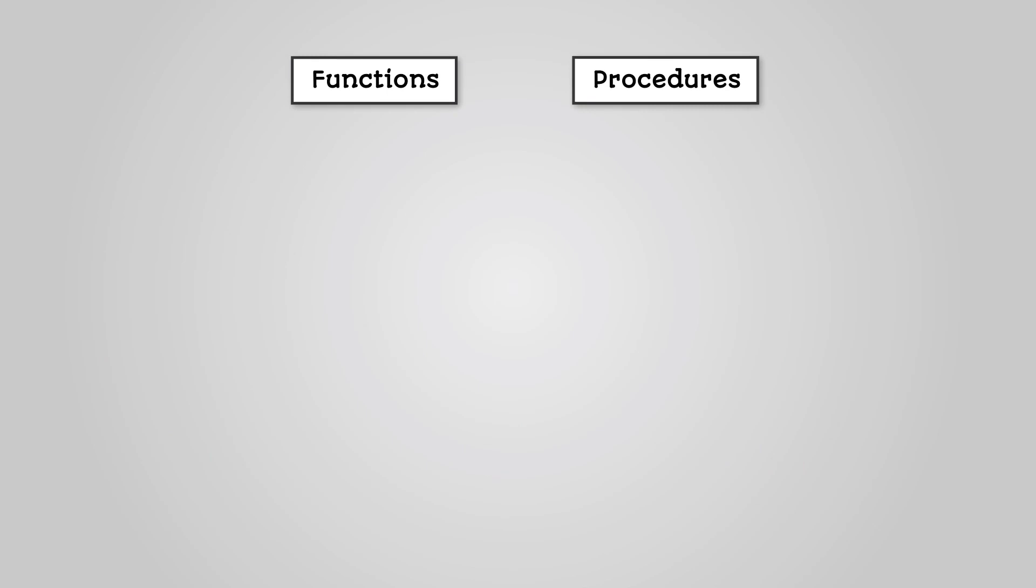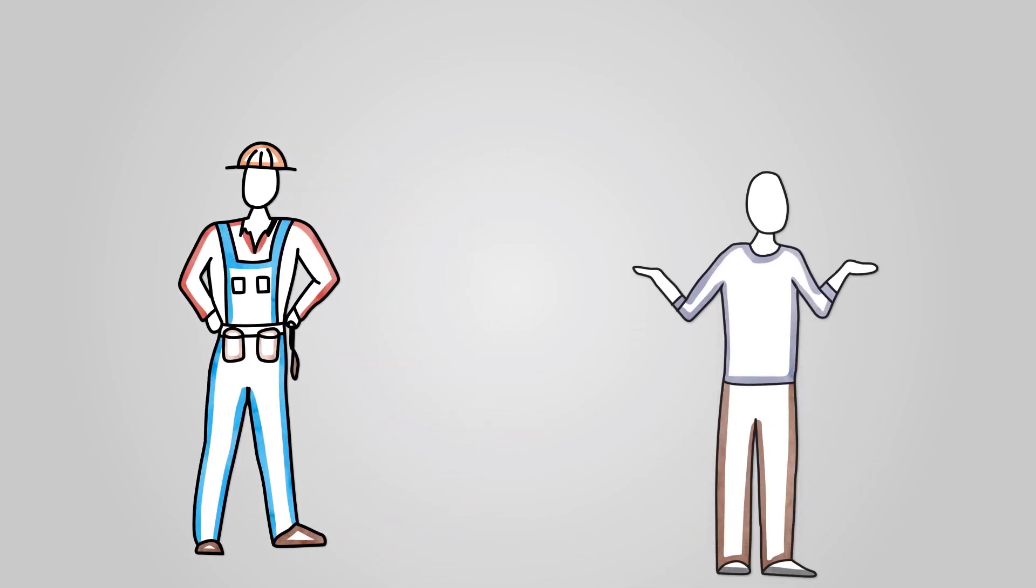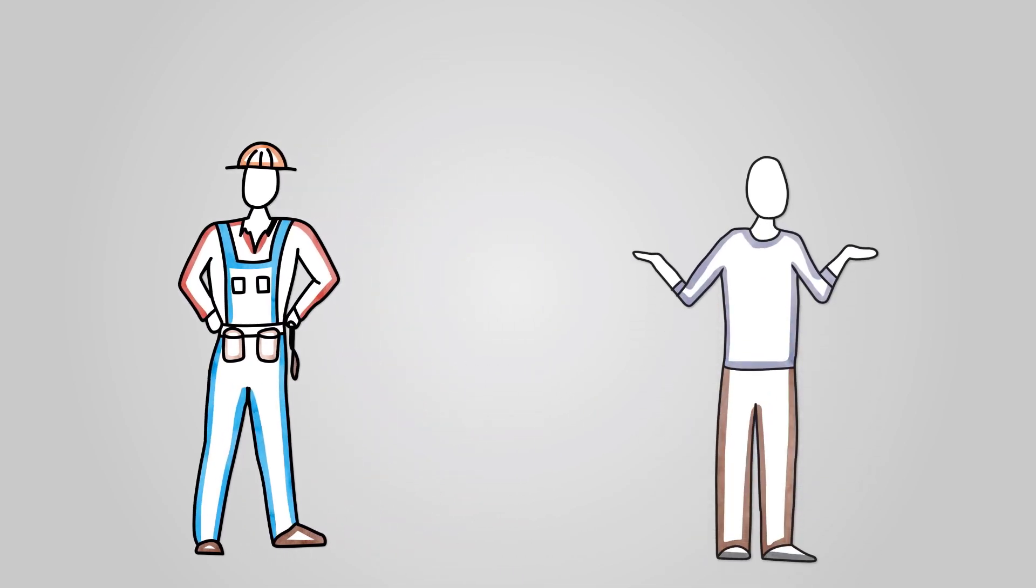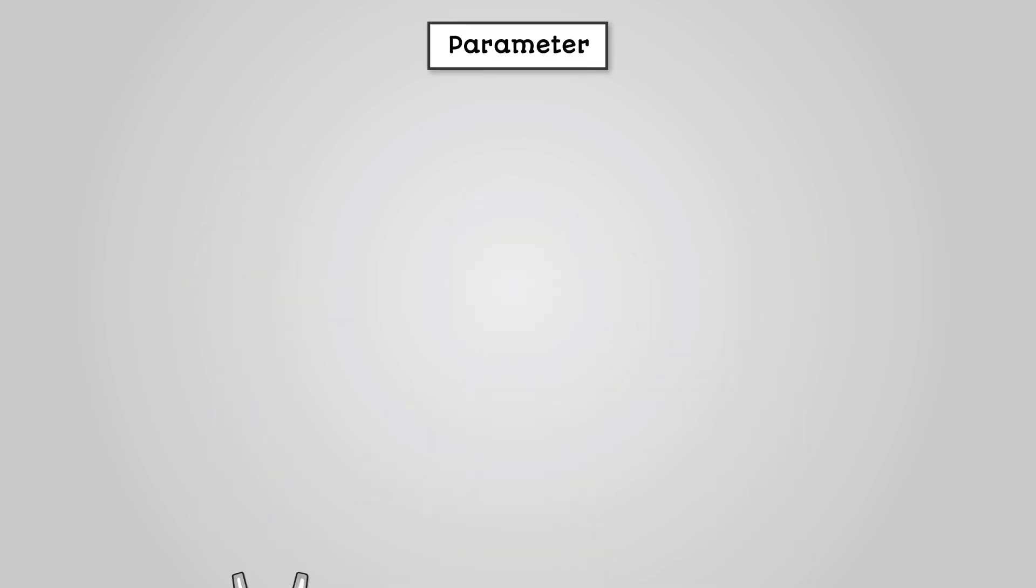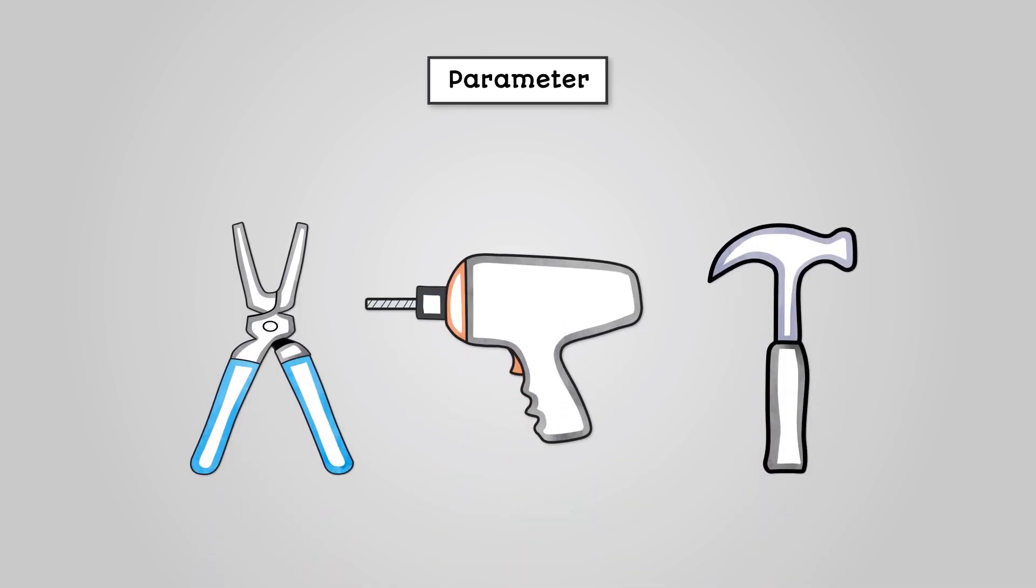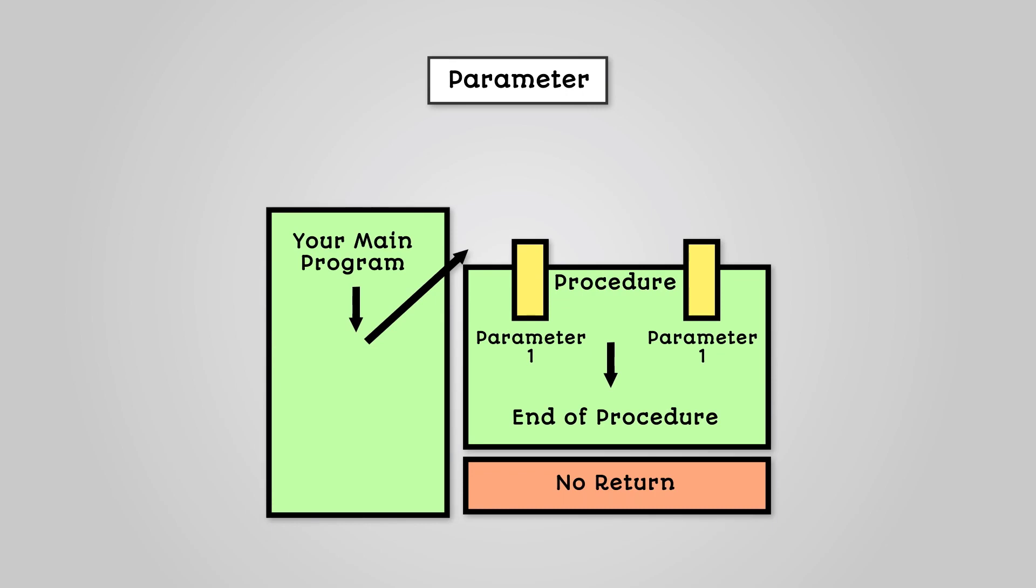A procedure is a piece of code that goes away and does a specific job. A procedure does not return anything to the main program. When you want to use a procedure you call it. A parameter is a variable that a procedure needs to do its job. Parameters are passed into the procedure from the main program.